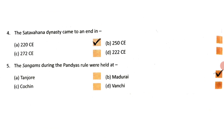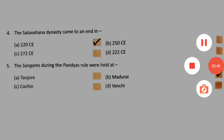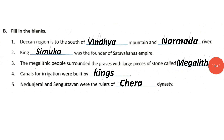Question 5: The Sangams during the Pandyas' rule were held at B, Madurai. Section B: Fill in the blanks. Question 1: The Deccan region is to the south of the Vindhya mountain and Narmada river.